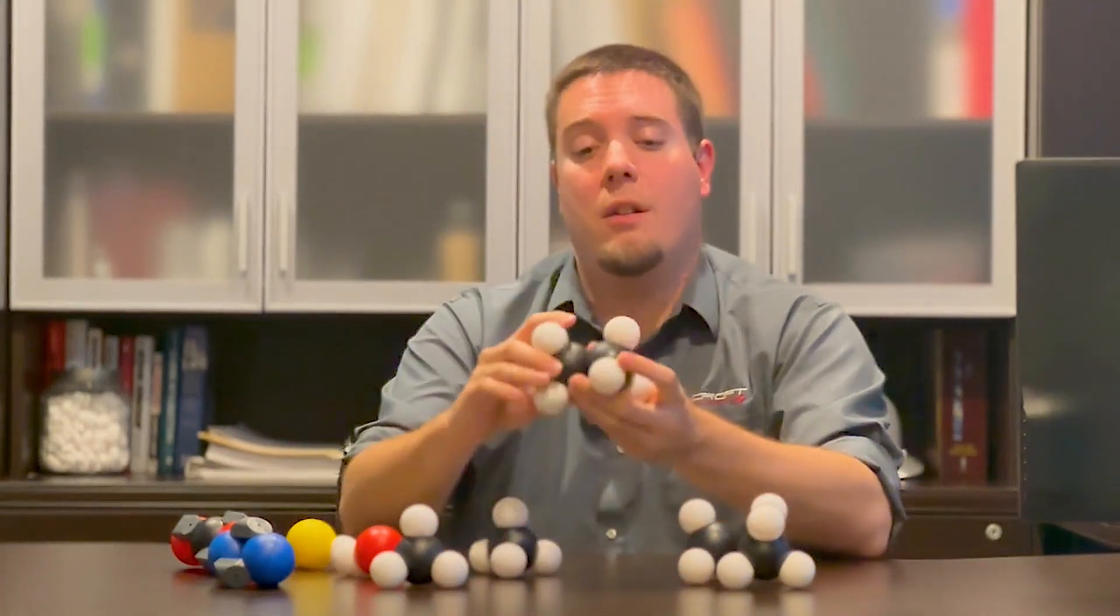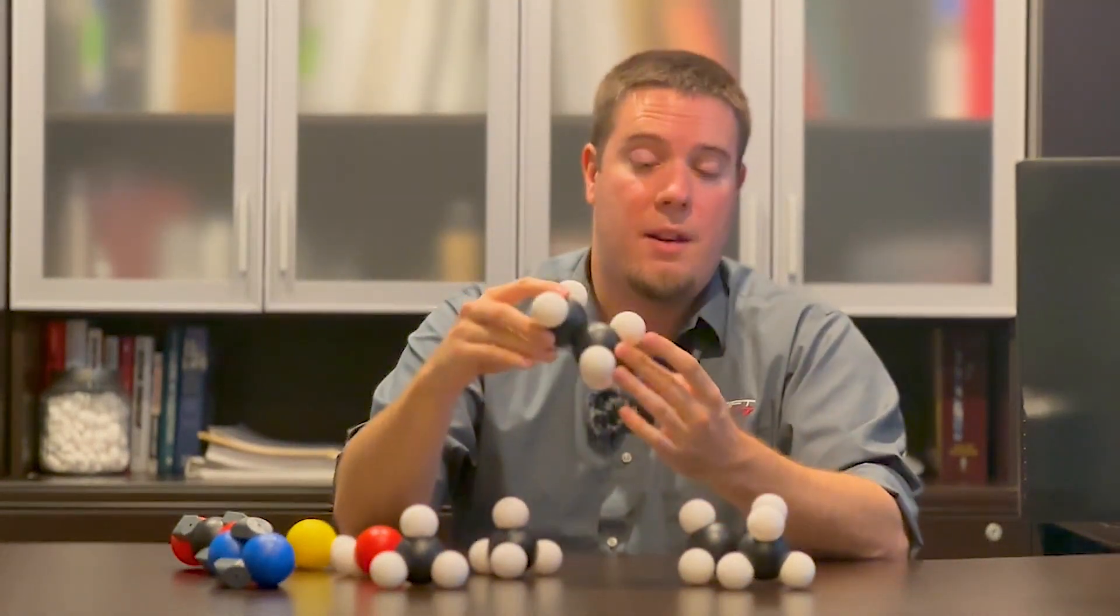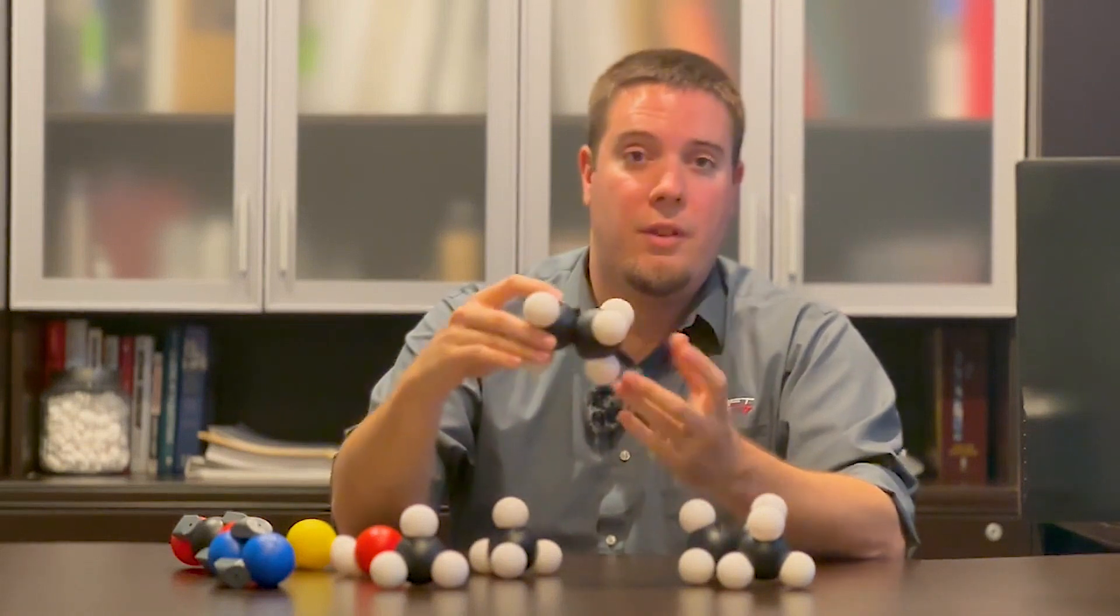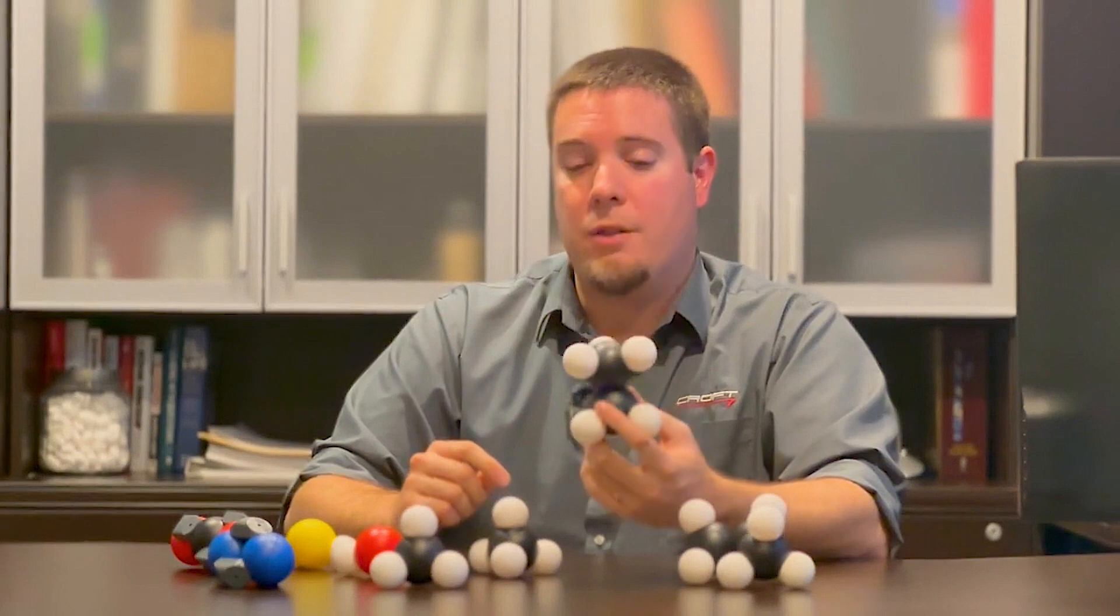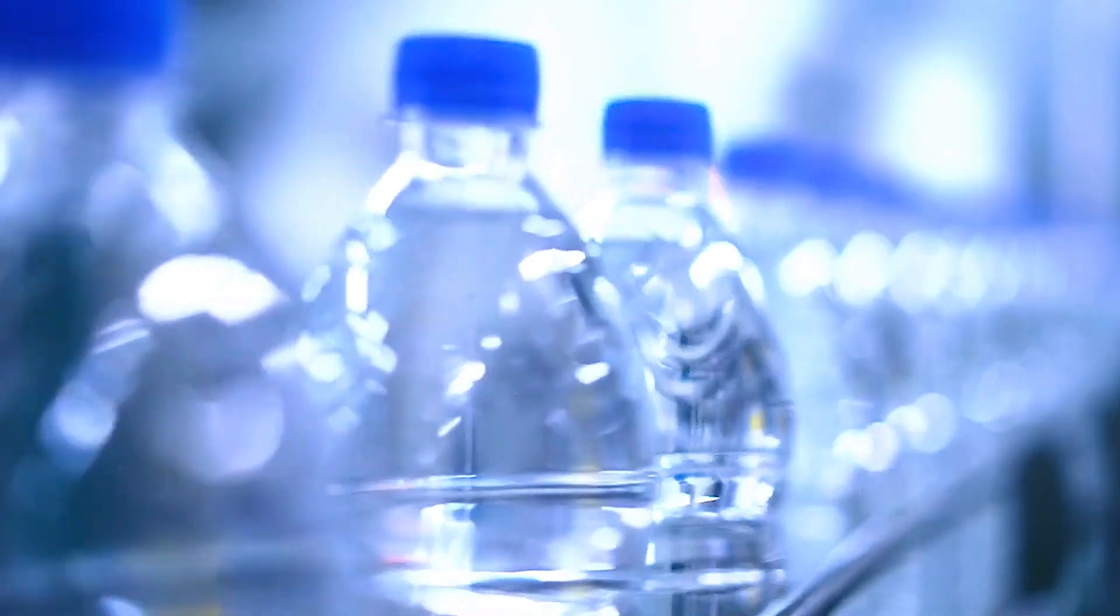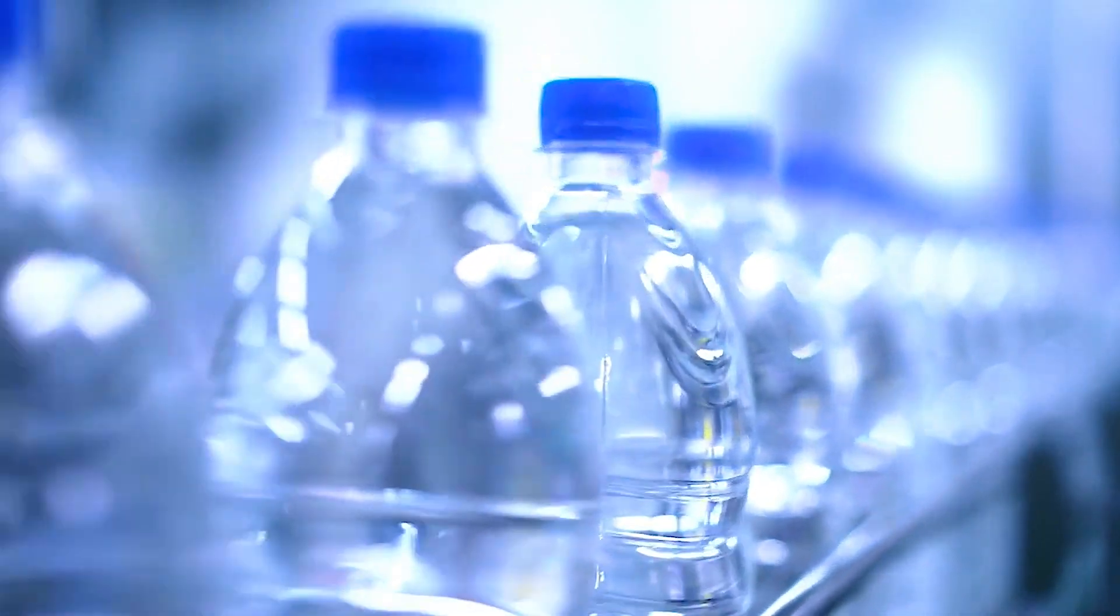Now these can combine together into longer chain hydrocarbons such as ethane. Ethane has got two carbons and six hydrogens, and we use it a lot for plastic manufacturing. Ethane will be turned into the plastics that we use in our everyday life.